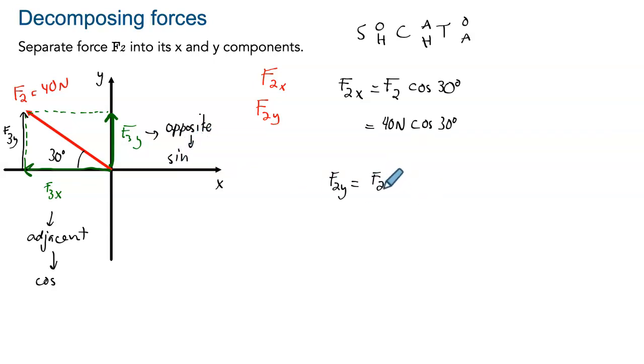And because it's opposite to the angle, we know we have to use the sine to do it. So we'll get F2 times the sine of 30 degrees, which will be equal to 40 newtons times the sine of 30 degrees. So with this, we have both our values. So we are now ready to apply the equilibrium condition.